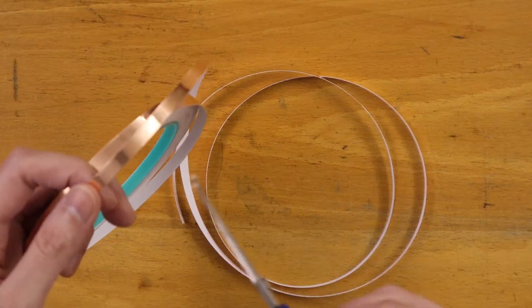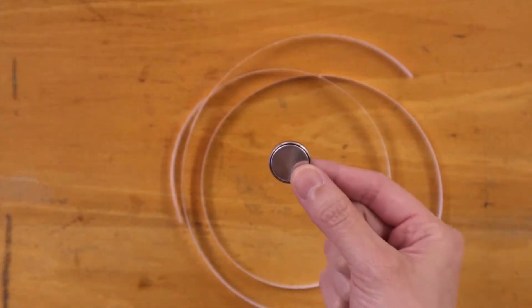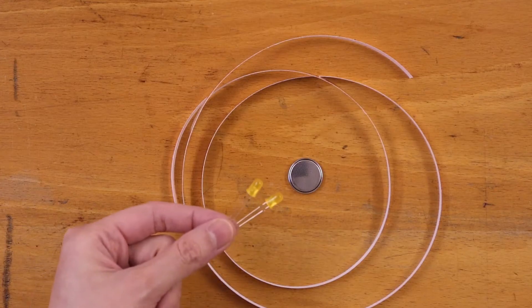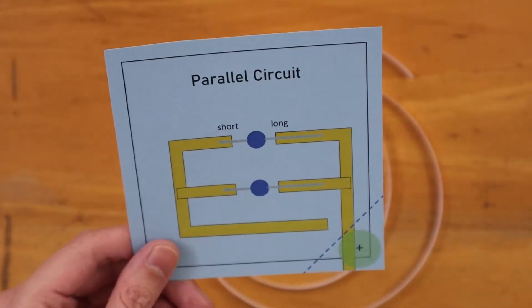To make a paper circuit, you need a strip of copper tape to conduct electricity, a coin battery—here I'm using one that delivers 3 volts—2 LEDs, and I made a template to go with it.